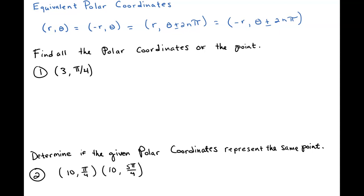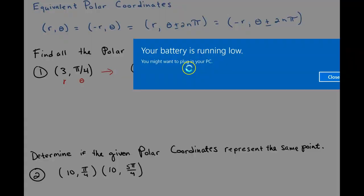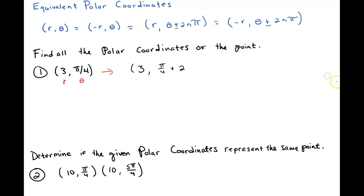So what we're going to do is we're going to take a look at this first example, and they give us 3, that's the value for r, and then they give us π/4. So this is our θ. And so one way that we can write this is by saying, okay, well, what if we have 3, and then we have π/4 + 2nπ. And I'm going to take that ± to mean plus and minus, but that's fine, because you could have a negative n value that would make it negative.